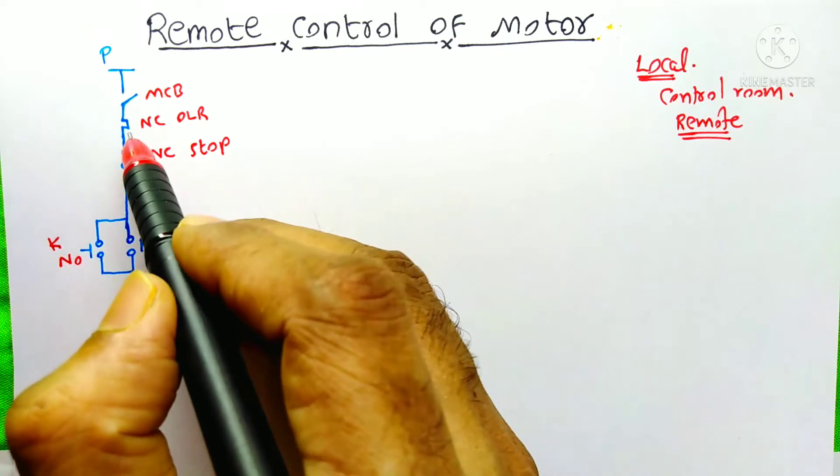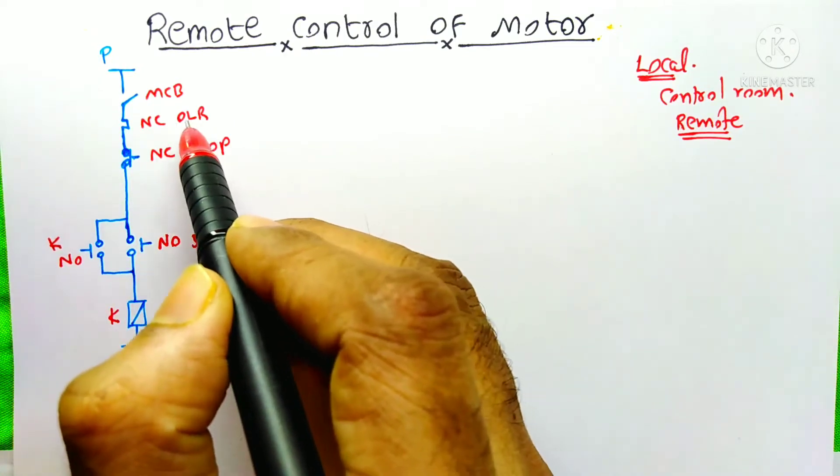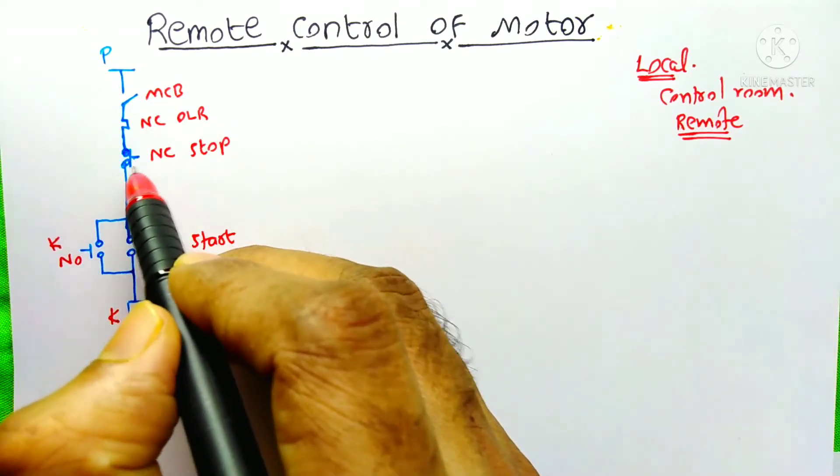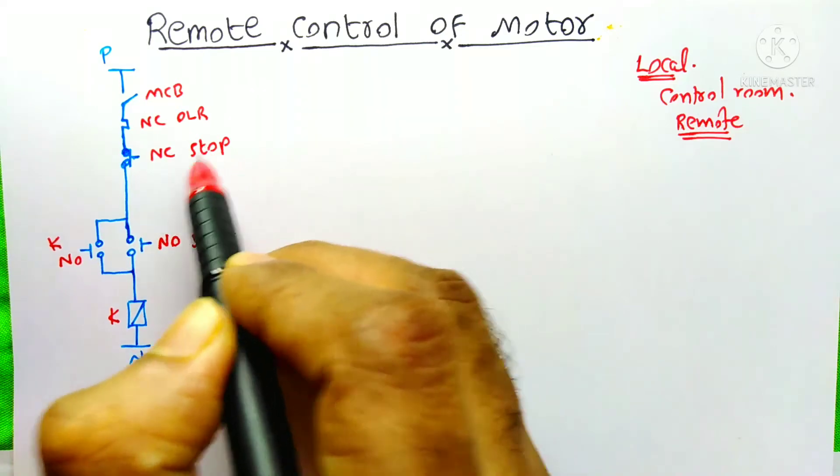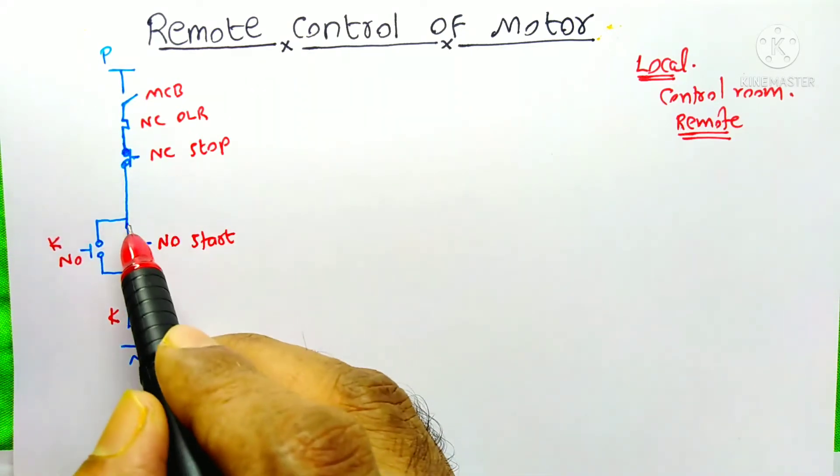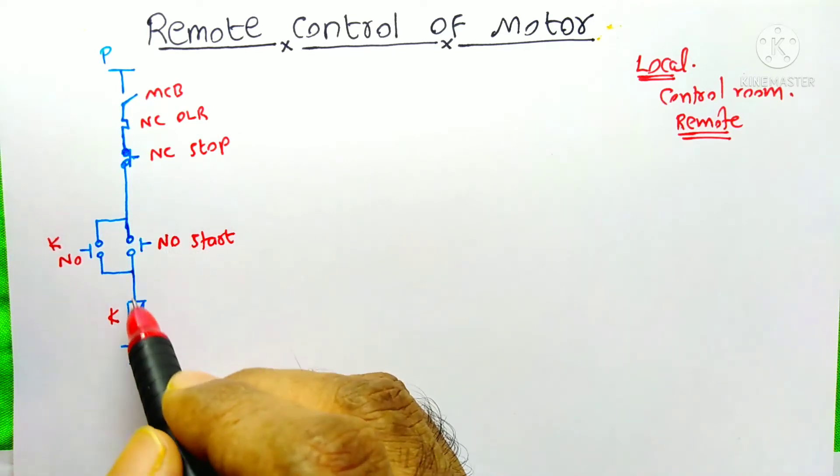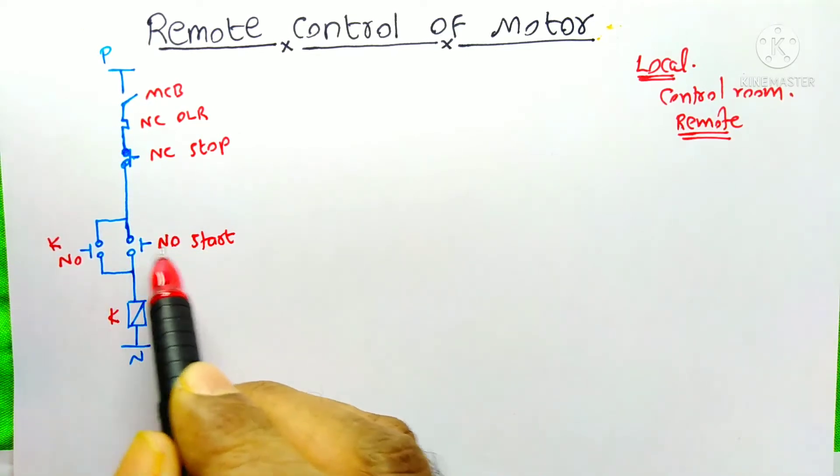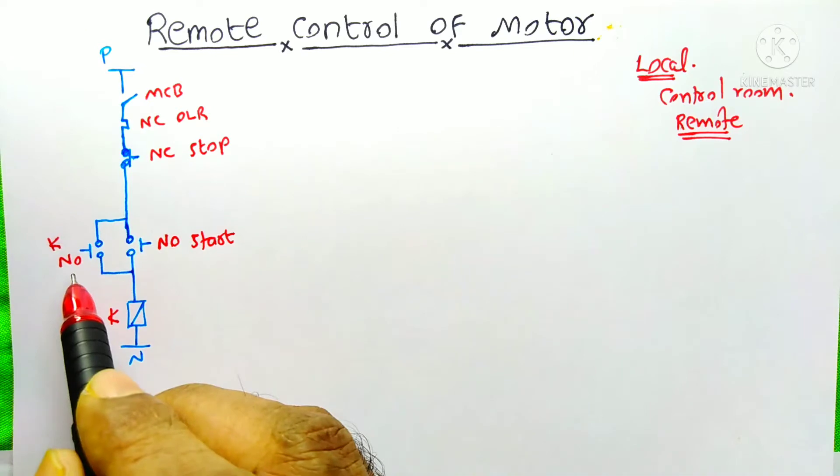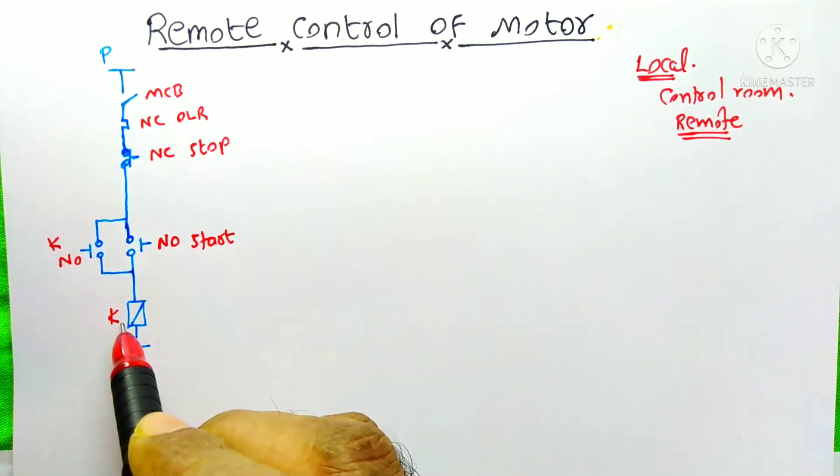If the MCB is on, the power reaches the NC contact of the overload relay. Then it will reach the NC contact of the stop push button. After that, it will reach up to here, this point. And if we press the start button, then the power will reach the contactor. On the parallel of this NO start button, here is a NO contact of this contactor K.